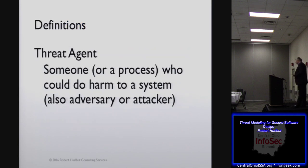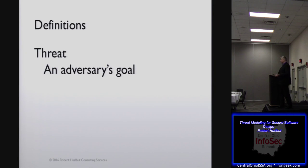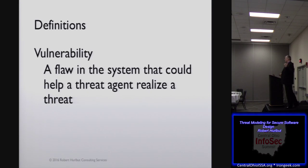Some quick definitions. A threat agent is just someone or a process that can do harm to your system. A threat is essentially the goal — what is it that that adversary wants, what is it that they want to do? Now, that's different than a vulnerability. A vulnerability is the flaw in the system that allows the threat to be realized.